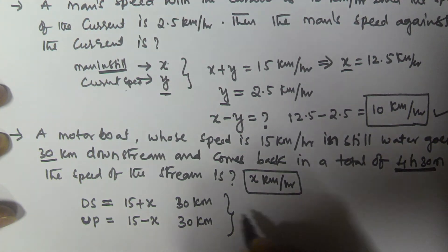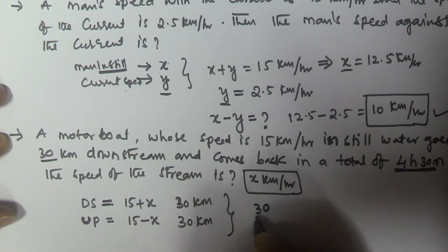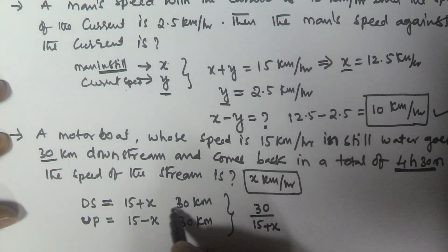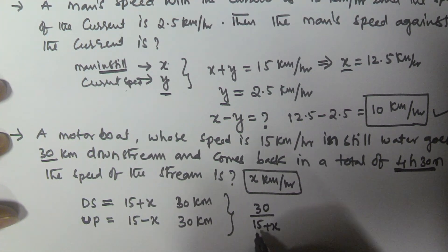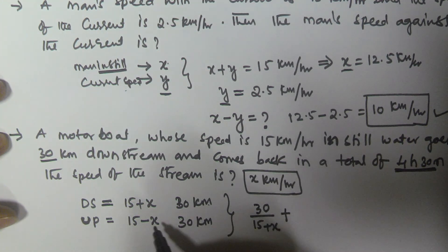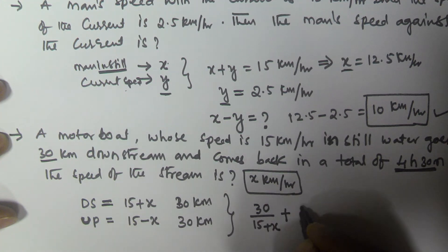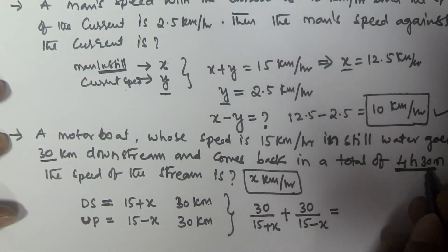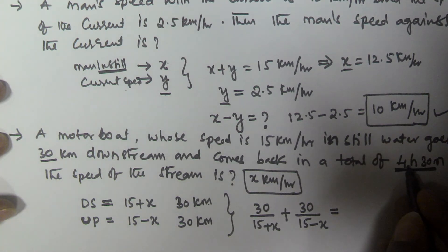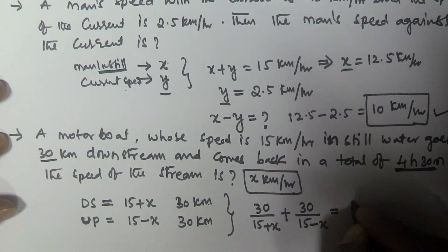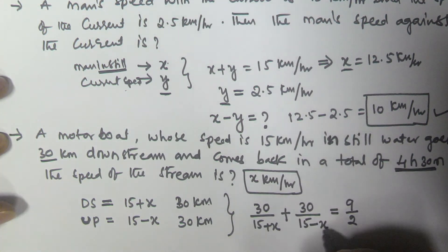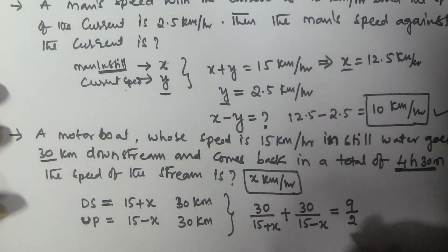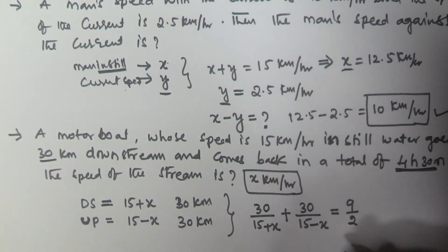The total time for 30 km downstream and 30 km upstream is 4 hours 30 minutes. So the time equation is: 30 divided by (15 plus x) plus 30 divided by (15 minus x) equals 4 hours 30 minutes, which we convert to 9 by 2. Now we will solve this equation to find the value of x.